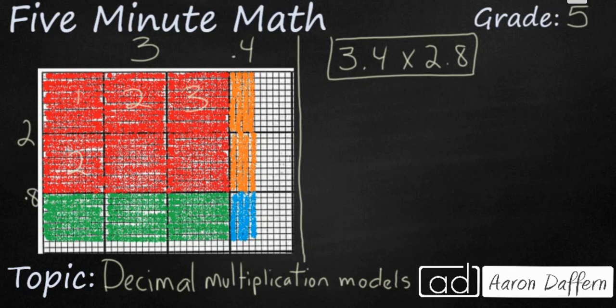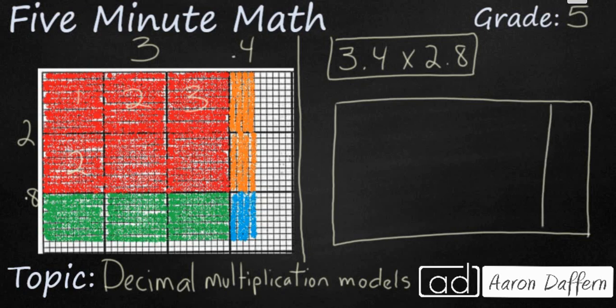And so what we can do is we can go ahead and draw ourselves a rectangle here. And what we're going to do is we're going to make it little. We're going to put four sections but they're not going to be quarters because they're not going to be equal. And this is going to mirror what we have over here on the left side. But this is how you draw it on your own. We're going to use the distributive property of multiplication. We're going to break apart this number into 3 and 0.4, and then 2 and 0.8.